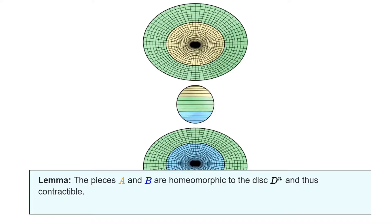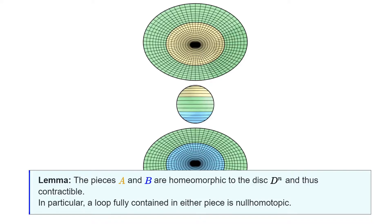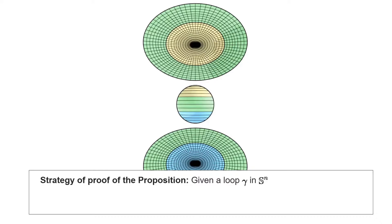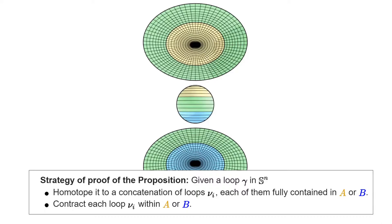The idea behind the proof is to exploit the fact that the pieces are simple, and therefore any loop in them can be contracted. Given a loop Gamma, we will make a first homotopy to a different loop Nu, such that Nu is a concatenation of loops coming from each of the pieces separately. Once that is achieved, we will be able to contract the little loops Nu_i individually, and therefore Nu itself. Let us go through the details of the proof.